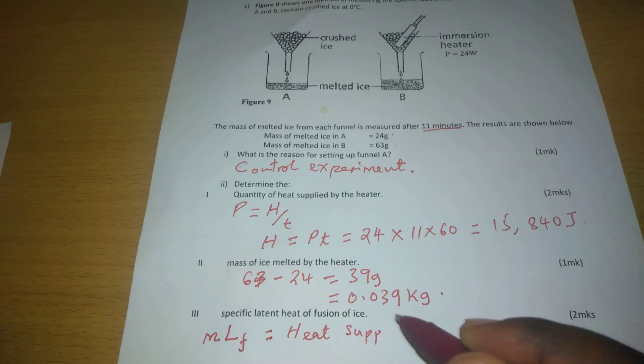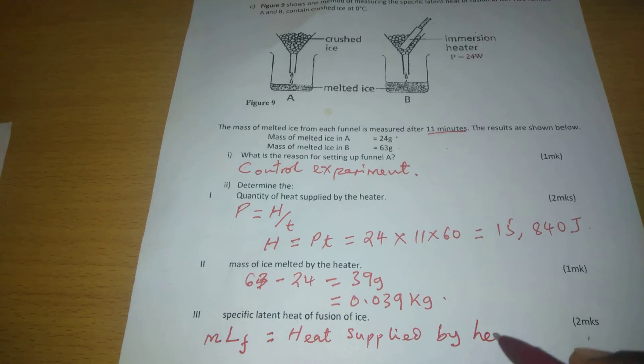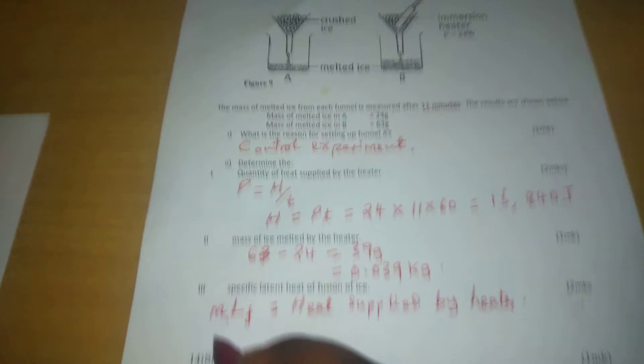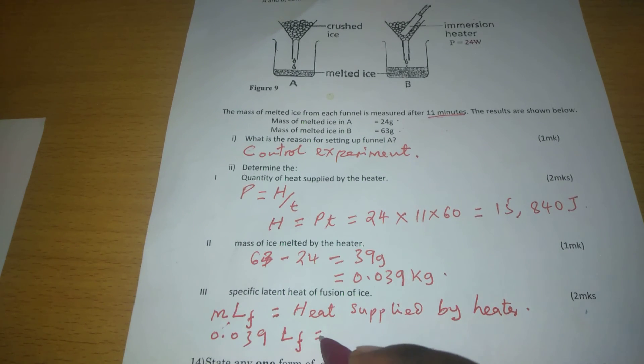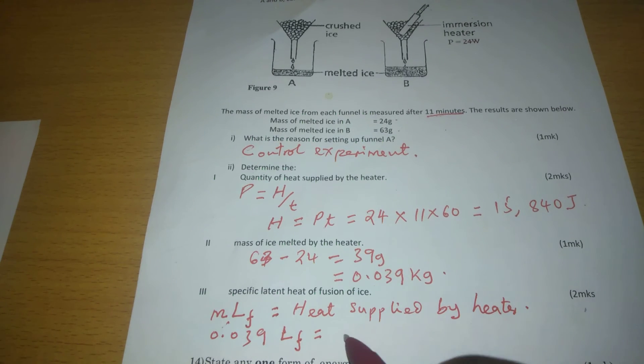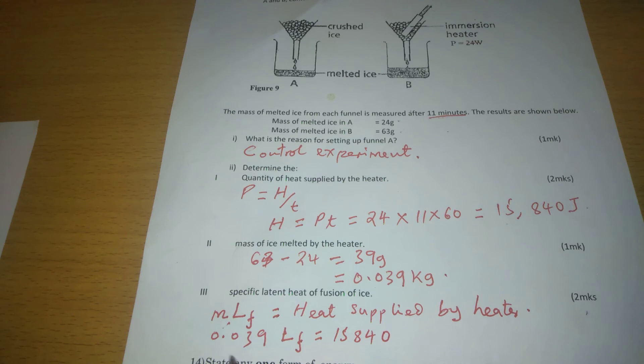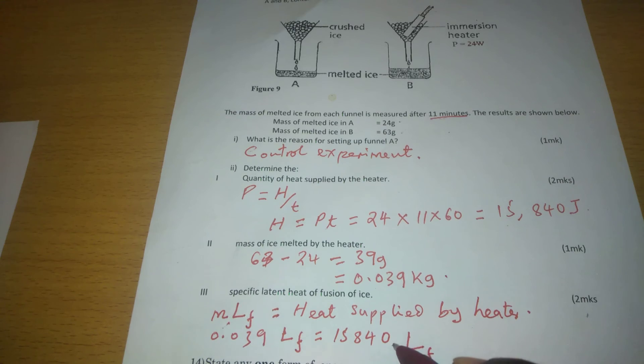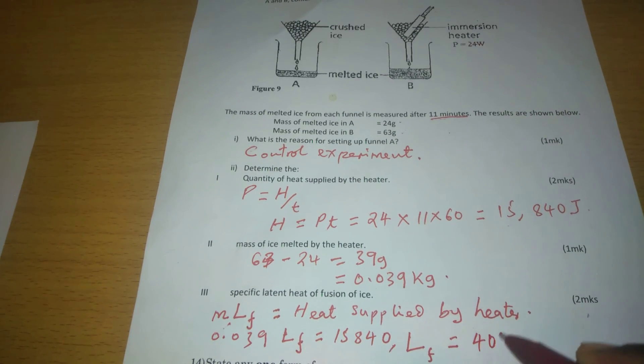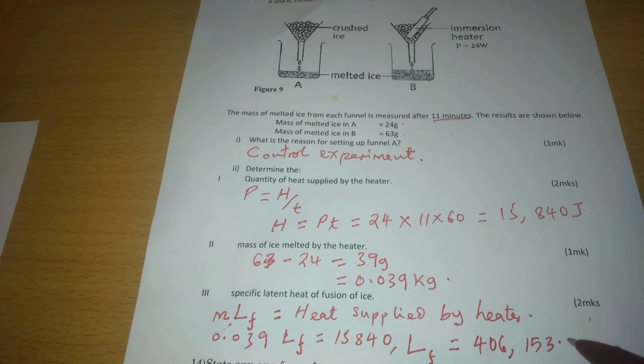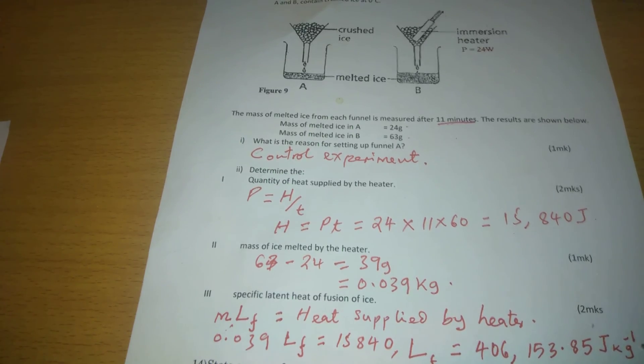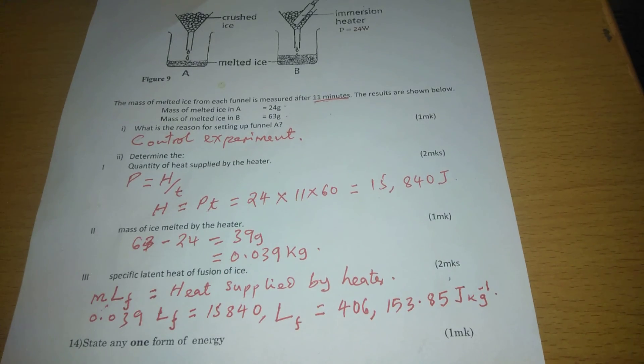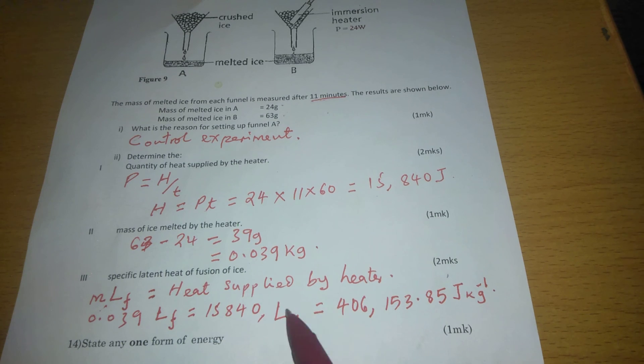This amount of heat energy is going to be the same as the heat supplied by heater. So we can say 0.039 times latent heat of fusion, which is unknown, should be equal to the amount of heat energy supplied by heater, 15,840. We divide through by 0.039 to get the latent heat of fusion, which is going to be 406,153.85 joules per kilogram, because we are dividing energy in joules by mass in kilograms.